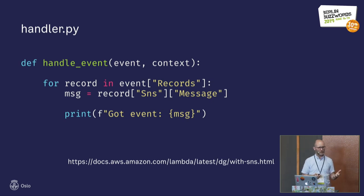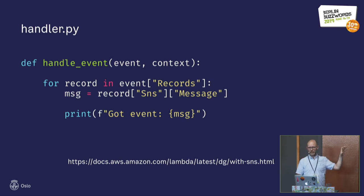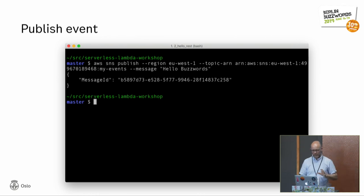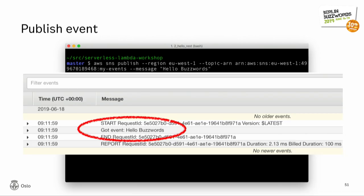In our case, we typically write the latest observed sensor value into DynamoDB so we can build a simple API on top of that to query the last observed value. To publish an event, you can use the SNS console or the AWS command line tool with 'sns publish', giving it your region, topic ARN, and a message. You'll get feedback on the message ID. Looking at the CloudWatch logs for the Lambda function, we can see the event that was received and logged.